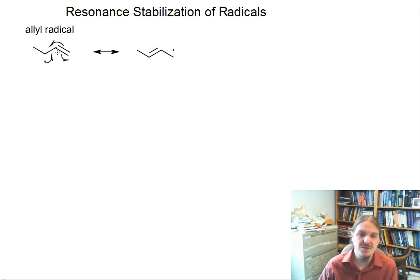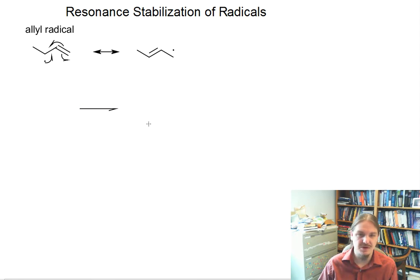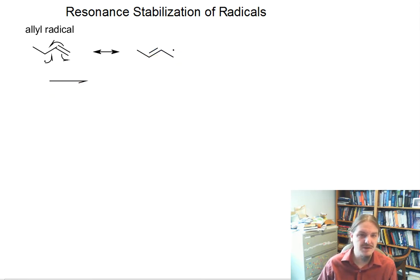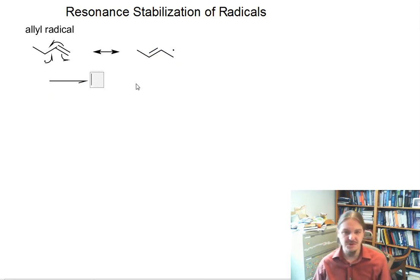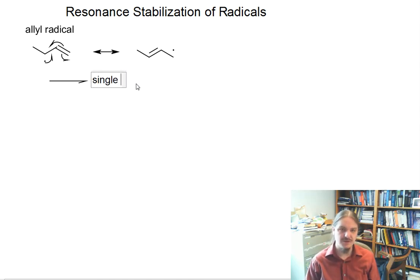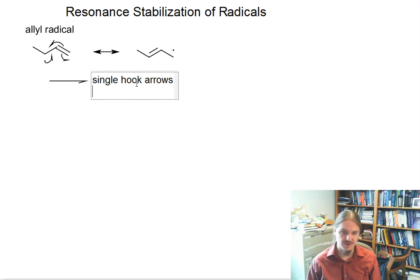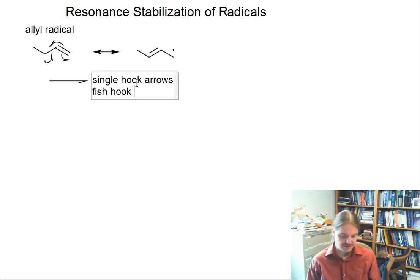As you look at what I've just drawn here, you might immediately see something different in the type of arrow that was drawn. Radical mechanisms and radical resonance structures use single-hook arrows, sometimes called fish-hook arrows, because they actually look like fish hooks.